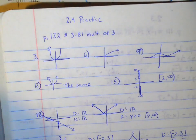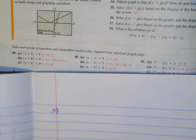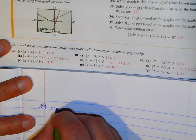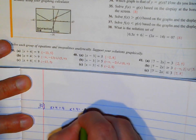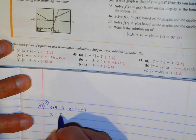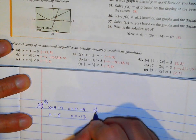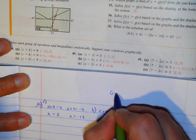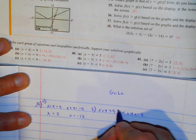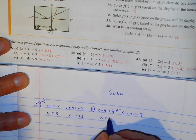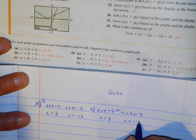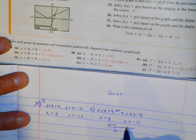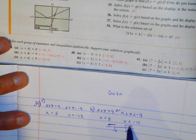Number 39. Now we're getting into solving absolute value equations. Part A: |x + 4| = 9. Set up x + 4 = 9 and x + 4 = -9, giving x = 5 and x = -13. Part B: |x + 4| > 9. Using greater-than as an or statement, we get x > 5 or x < -13 — all numbers less than -13 or greater than 5.